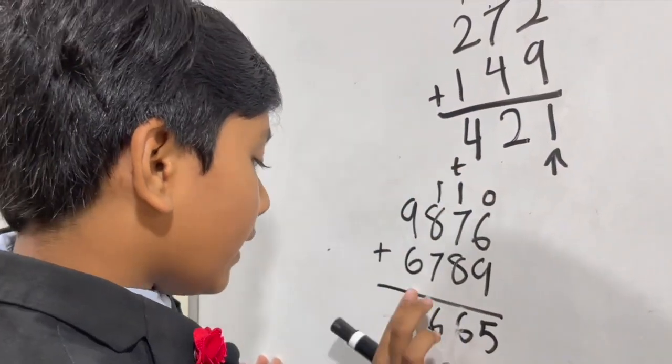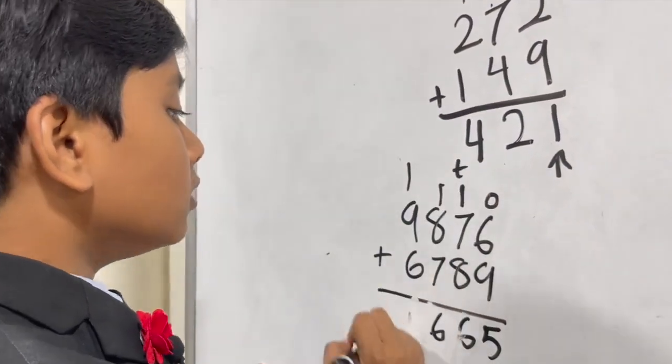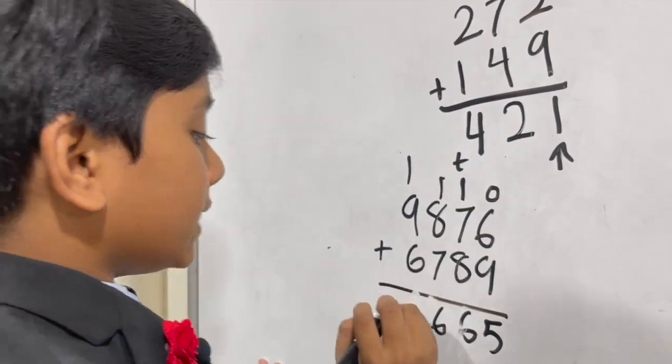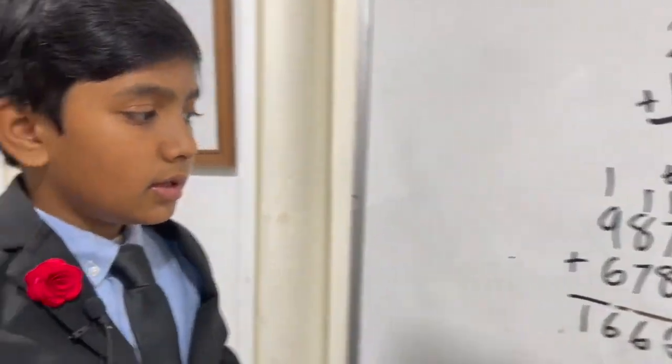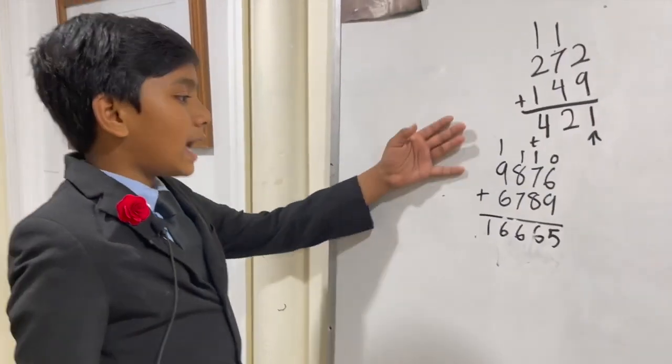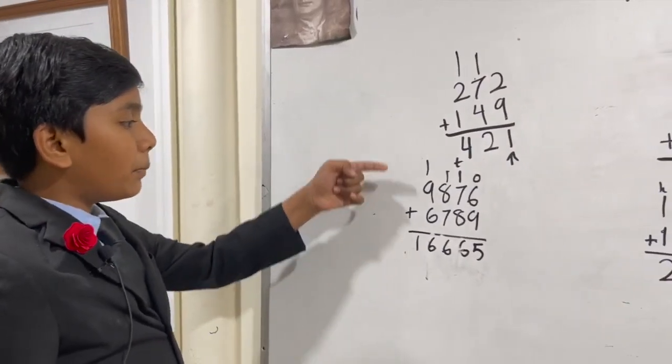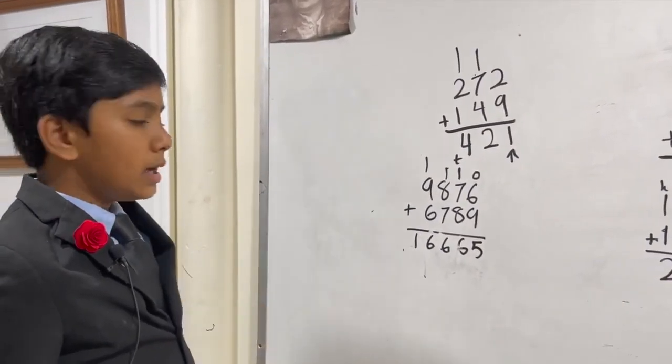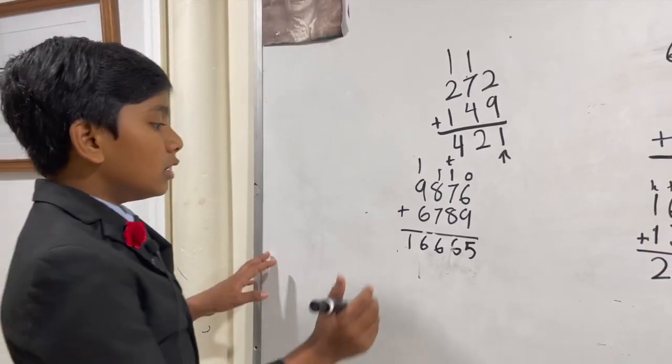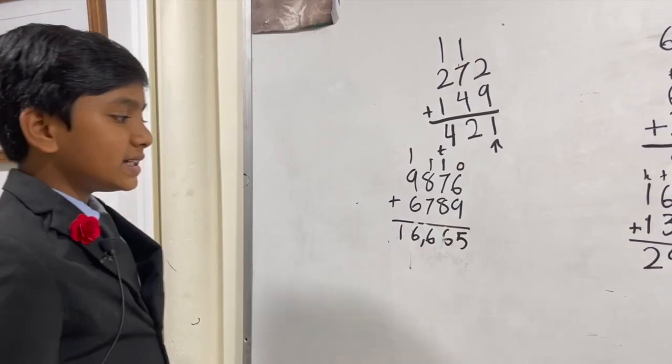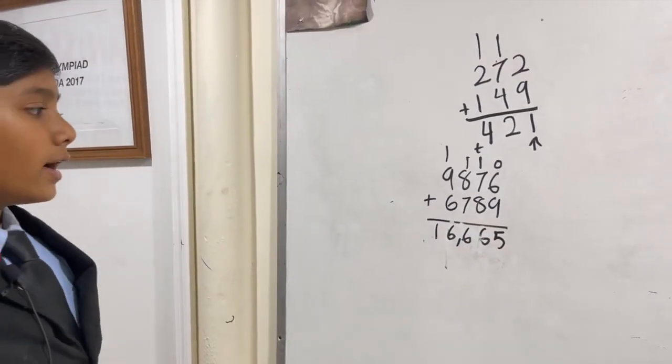1 plus 9 plus 6 is 16. But, oh wait, there are no other things to add here. So, we don't have to put the 1 up top because that's the only thing that will be in this spot. So, our final answer is 16,665.